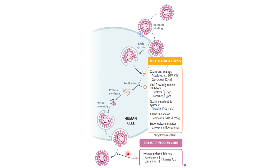We have various drugs acting at different steps of this process in order to terminate it. For example, we can block the replication of the virus by inhibiting the nucleic acid synthesis. We have guanosine analogues, viral DNA polymerase inhibitors, guanine nucleotide synthesis inhibitors, adenosine analogues, and endonuclease inhibitors.